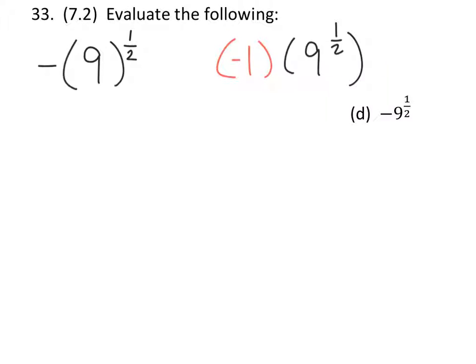So we will treat it like one of these two scenarios. Keep the negative 1 there or the negative in front and then just evaluate 9 to the power of 1 half. So I'm going to keep it written like this, negative 1 times 9 to the power of 1 half, to show that this is two different factors.